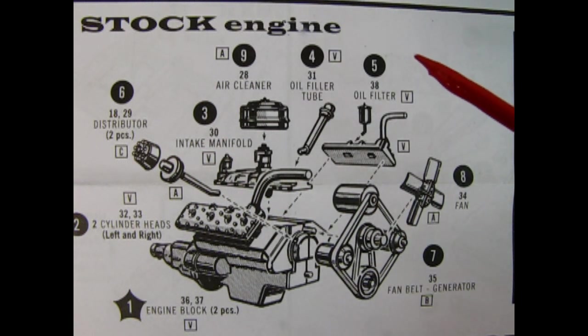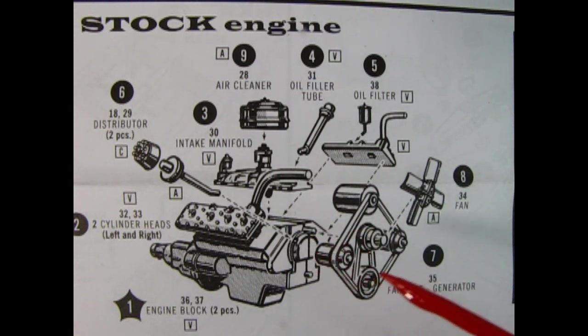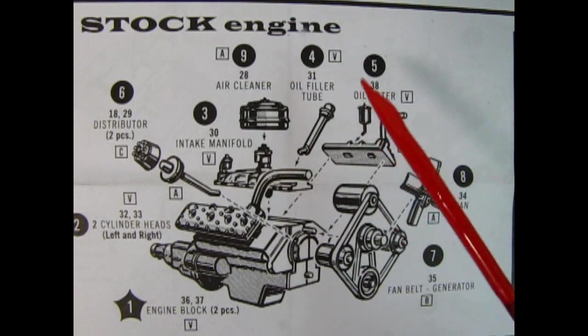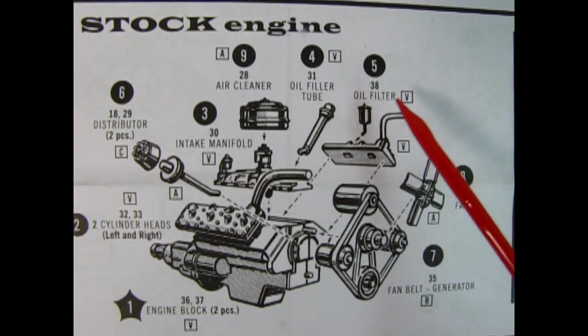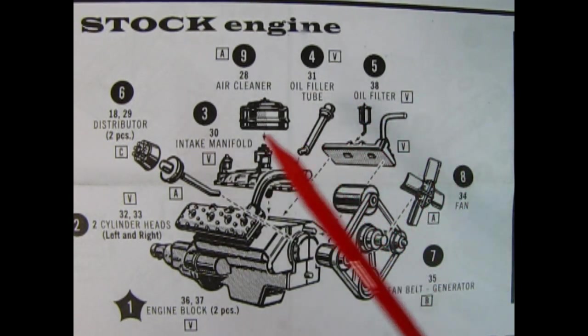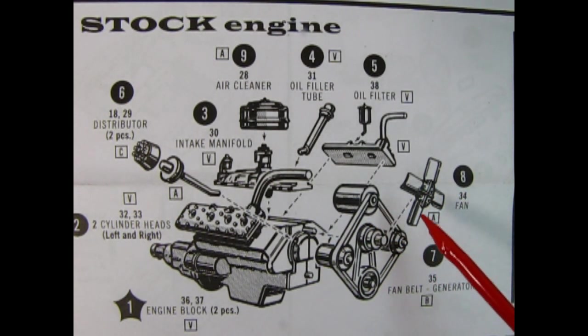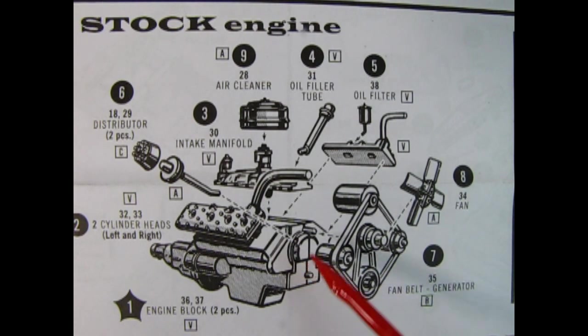Let's start by looking at the stock 239 cubic inch Ford engine. This 12-piece engine goes together in nine easy steps. First, cement the two engine halves together, then attach the cylinder heads right and left, put on the intake manifold, add in your oil filler tube, put on your oil filter, put the two-piece distributor together, and then attach it into the hole at the front right here. Add your fan belt and generator to the fan itself, and then put that on the front of the block, and then drop the air cleaner right on top of the carburetor.